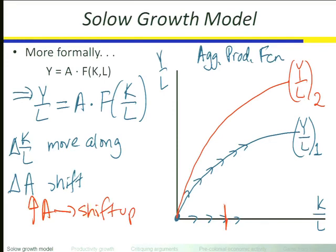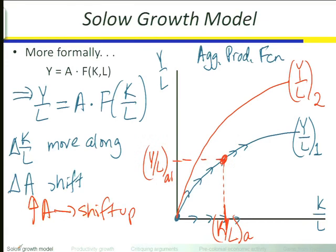For any particular combination of capital to labor — some value of K over L along the horizontal axis — at the old level of total factor productivity, the first line told us we would produce output Y over L sub A1. Once total factor productivity increases, we have a whole different production function. That initial production function ceases to exist. That value K over L sub A will now produce a much greater amount of output, up to the second production function — Y over L sub A2.